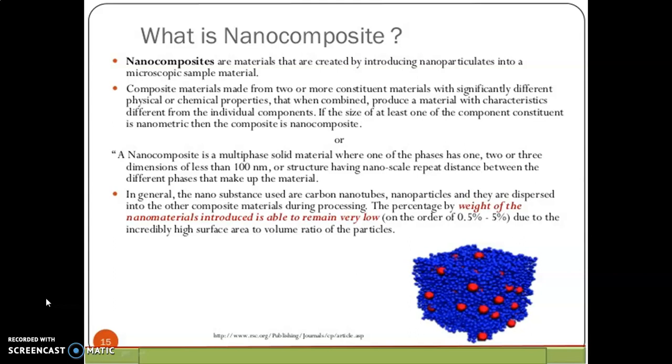That gives different physical or chemical properties, not belonging to the particularly one component of a particular product. It gives more sense when compared to the individual component. If the size of at least one of the component is nanoparticle, then the composite is nanocomposite. So, in that particular composite, any one nanocomposite or anti-nanocomposite or any nanoparticle, when you add a combination of material is called as the nanocomposite.